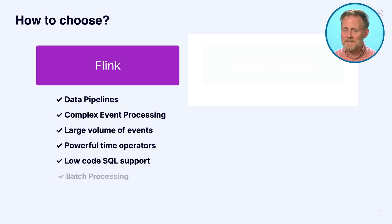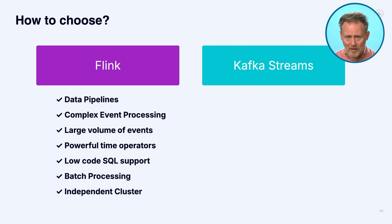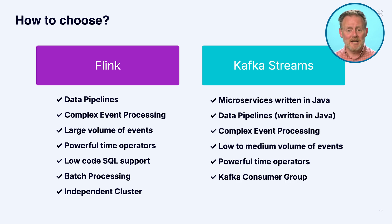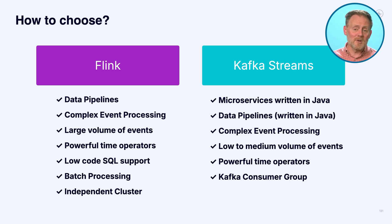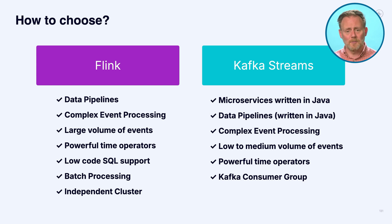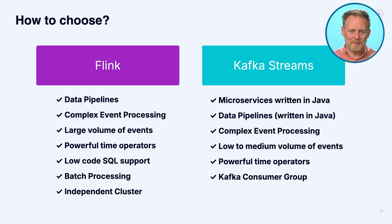Flink isn't the only option. There's also Kafka Streams, which is part of open source Apache Kafka — a Java library that comes with Kafka that you can write code against. There's great tutorials, documentation, and courses available. If you're a Java shop and you've got everything set up to deploy Java consumers, a Kafka Streams app is just an enriched, leveled-up Kafka consumer with all those same stream processing primitives built in.